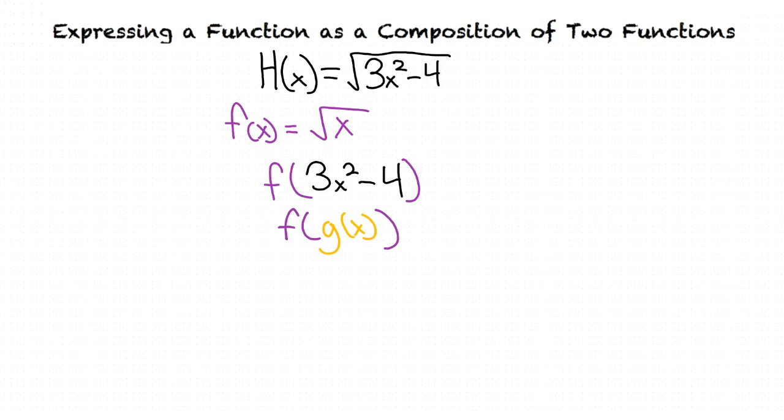We are looking for f of g of x. Since we have already found our f, we look to see what remains in our function. As we can see, 3x squared minus 4 is all that remains in our function. This means that g of x equals 3x squared minus 4.